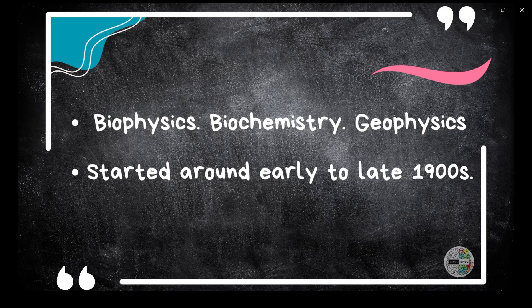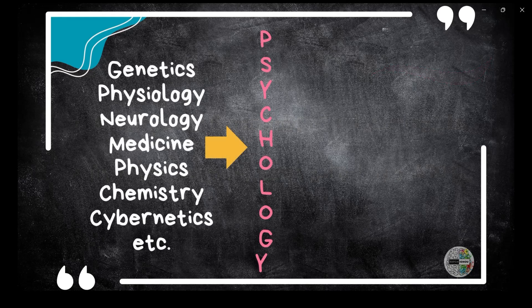Can you name some new areas of study that did not even exist like 200 years back and emerged solely because of transactionalism? Think of biophysics, biochemistry, geophysics — all these fields have emerged as recently as the 1900s. Because of transactionalism, we cannot isolate one specific science from another. Try isolating chemistry from biology, or math from physics, or even genetics from psychology. That's why even though psychology is an independent field of study, it borrows from the advancements in genetics, physiology, neurology, medicine, physics, chemistry, cybernetics, and other sciences.